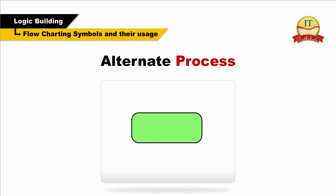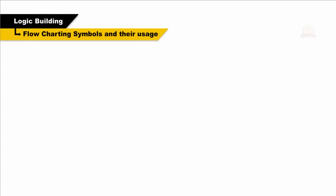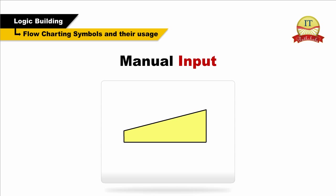Alternate process. As the name suggests, this flowchart symbol is used when the process flow step is an alternate to the normal process step. Manual input. This shape looks like a side view of a keyboard and often represents entering data into a computer via a keyboard.